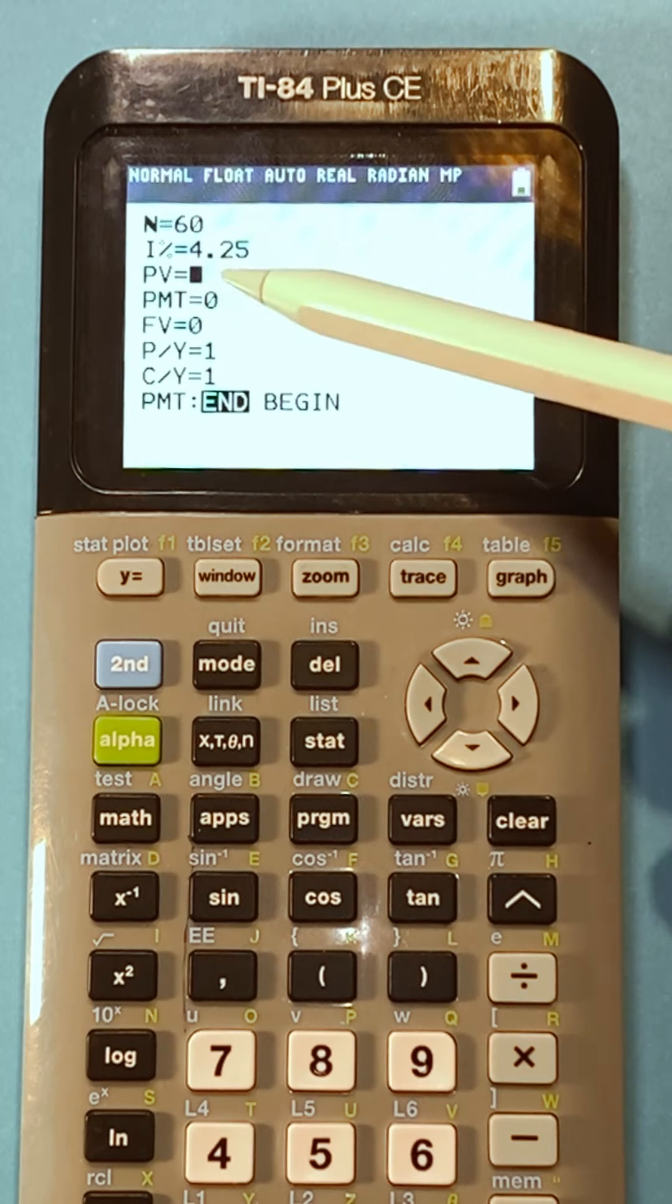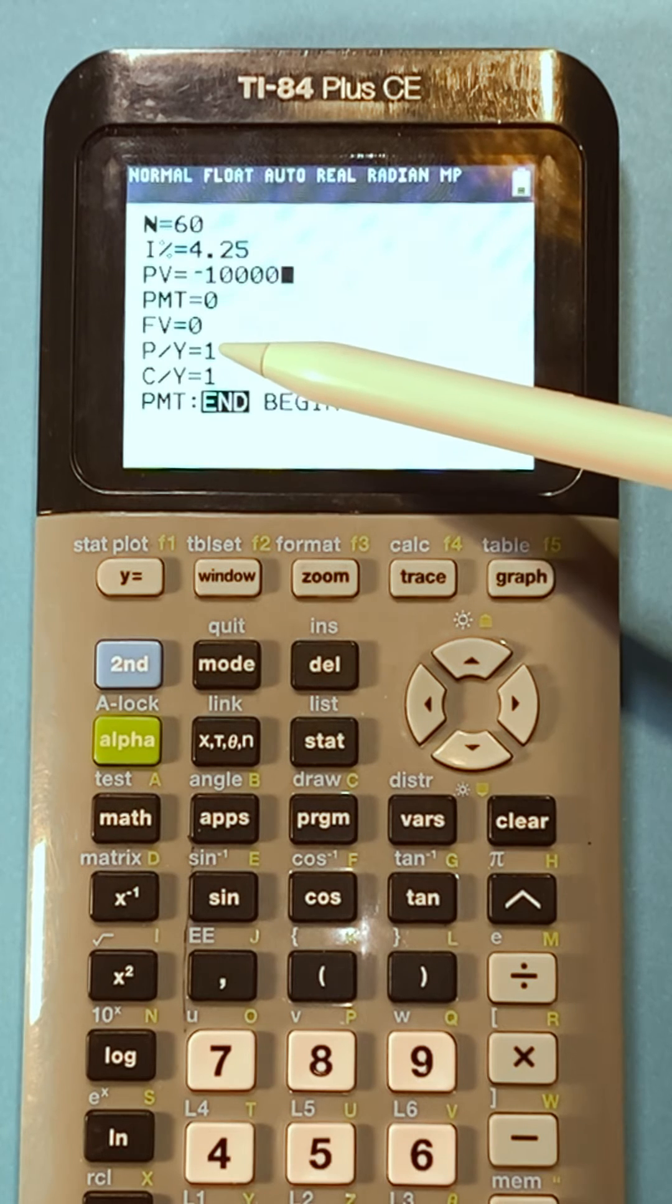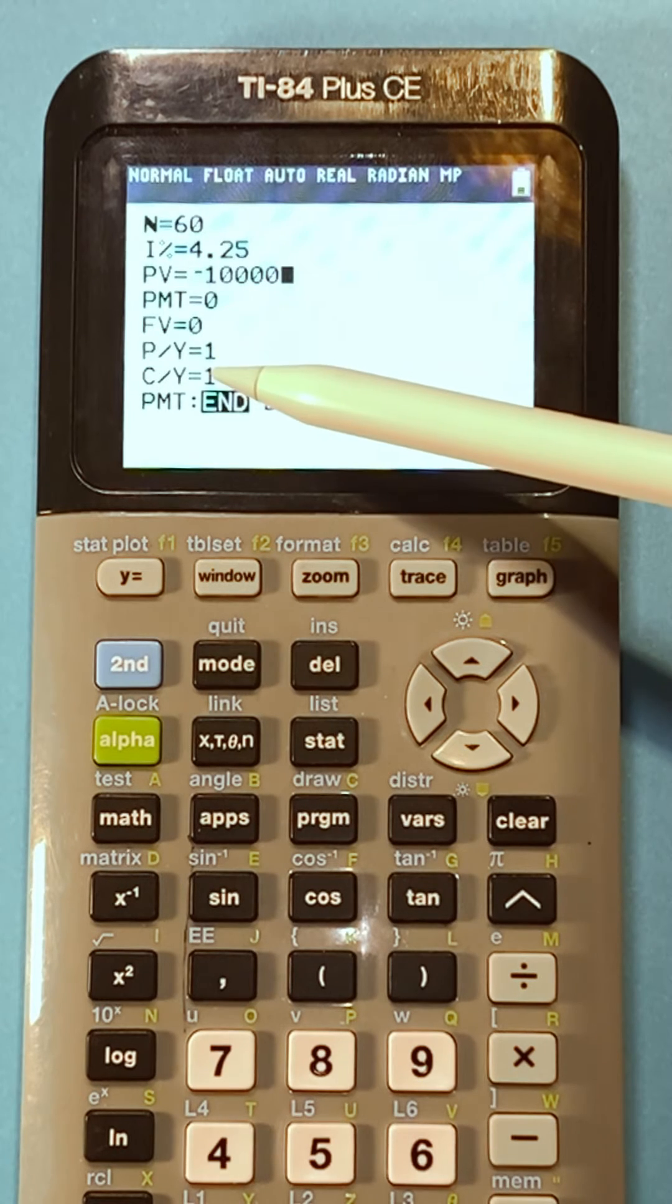Whichever one you consider leaving your pocket should be negative. Payment is if I'm making any payments towards a loan. PY is the number of payments per year and CY is the number of compounding periods per year.